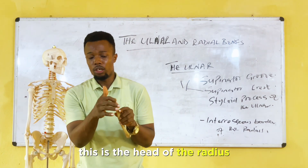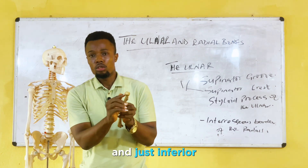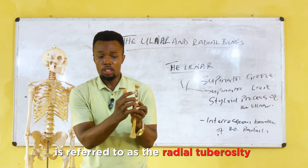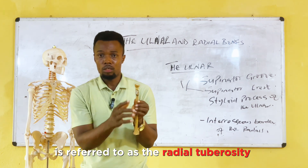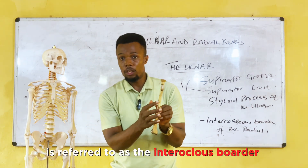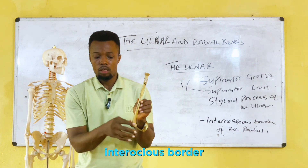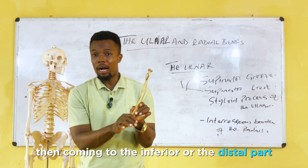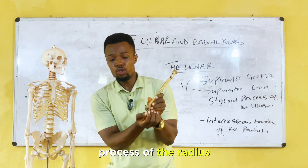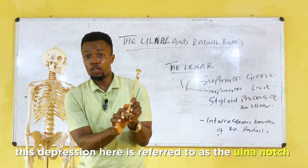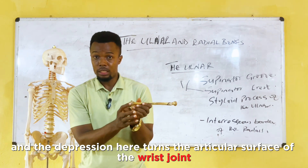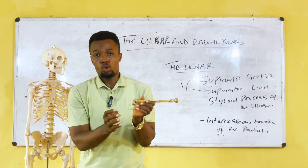On the radius: the head of the radius, the neck of the radius just inferior to the head, and the radial tuberosity. On the shaft is the interosseous border. At the distal part, the pointed part is the styloid process of the radius, the depression is the ulnar notch, and the distal depression forms the articular surface of the wrist joint together with the capitate bone.